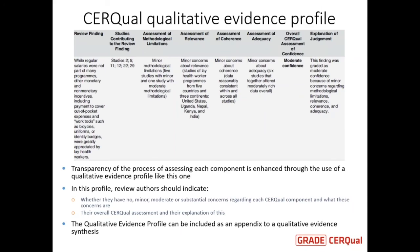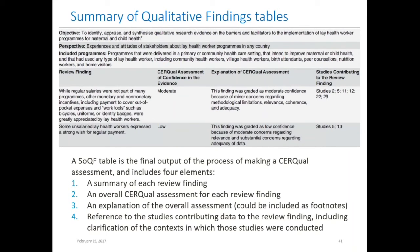For users, we also have the summary of qualitative findings table. This is a simplified version that firstly presents the review finding, secondly the overall assessment of confidence, third the underlying explanation of that assessment, and finally a list of the studies that contribute. This is a way of making these assessments transparent and usable for those who might be reading the review.